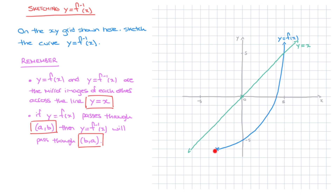The first key point is the starting point right here. It has coordinates negative 3, negative 6. And what we noted tells us that because f of x passes through the point negative 3, negative 6, its inverse function will have to pass through the point negative 6, negative 3 — which is the point right here. I'll label that: that's negative 6, negative 3.